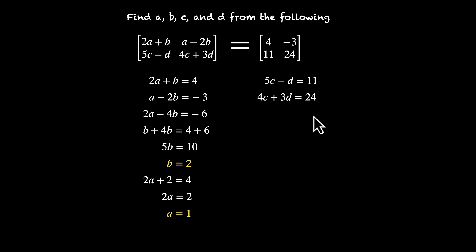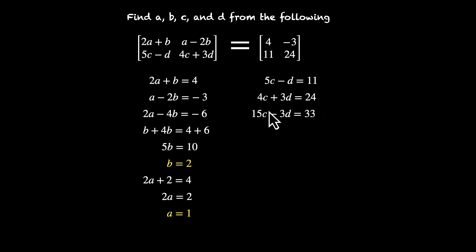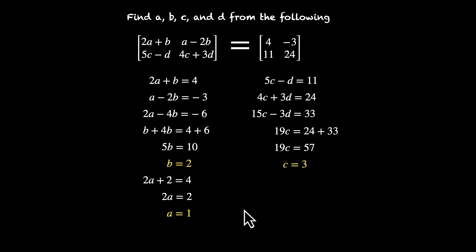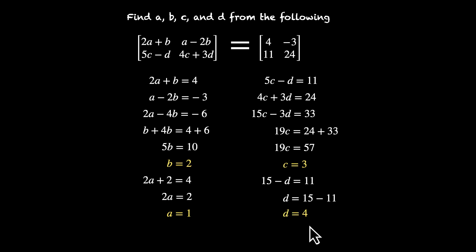Now let's find c and d. We have 5c minus d equals 11 and 4c plus 3d equals 24. Multiply the first by 3 to get 15c minus 3d equals 33, then add the two equations: 19c equals 57, so c equals 3. Substituting c equals 3 back in: 15 minus d equals 11, so d equals 4. Therefore a is 1, b is 2, c is 3, and d is 4.